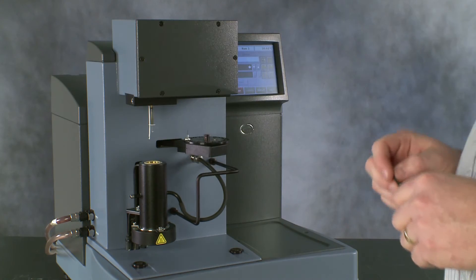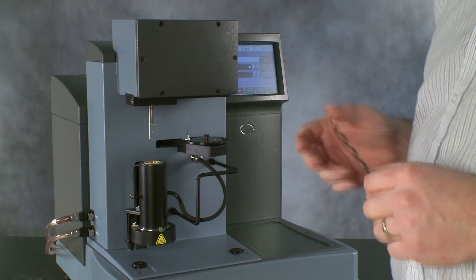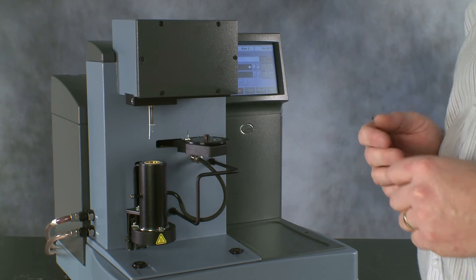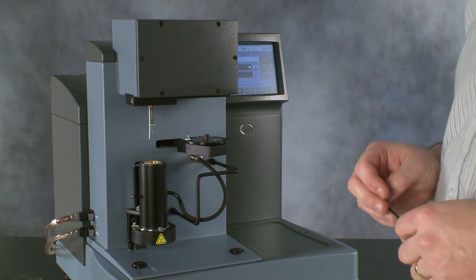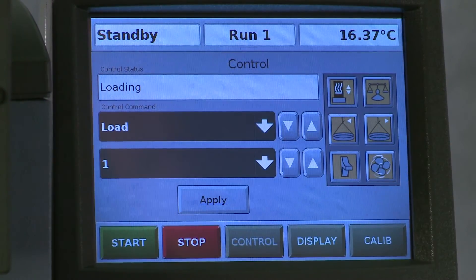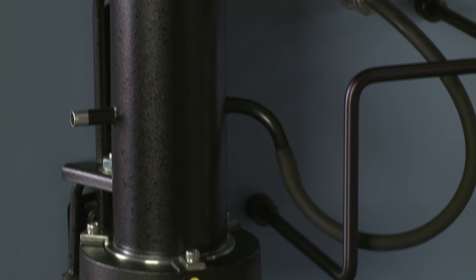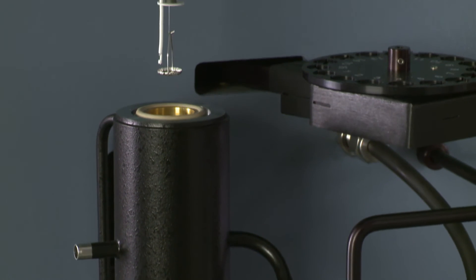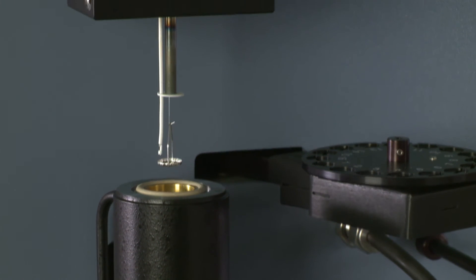Now our hang down wire has been replaced, we need to make sure that our hang down wire is well aligned with our furnace. And the way we do that is to load a pan up. Once the pan is loaded, we can stop the furnace so that it's level with the pan and we can see how well aligned it is.